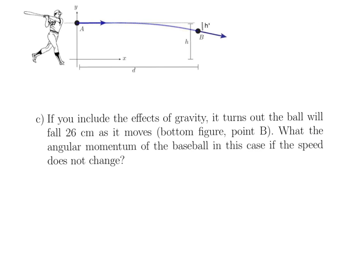So for part C, we're saying, okay, that actually doesn't make a lot of sense for the baseball to travel completely in a straight line. So if we include the effects of gravity, it turns out the ball will fall 26 centimeters. So this little distance right here is 26. And actually, I calculated that 26 centimeters. That's actually the correct amount based on how fast the ball is falling. So once we learn about projectile motion, you'll be able to make that calculation work as well.